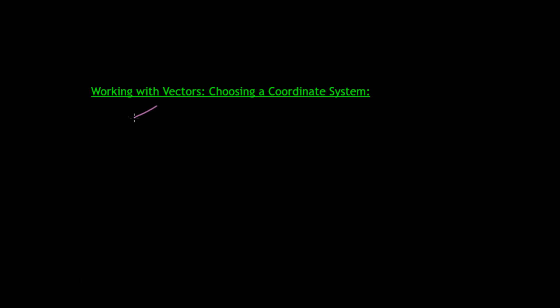We've talked about vectors and what vectors are — how a vector is just a quantity that has both a magnitude and a direction. Because of that, we represent vectors visually as arrows. It could point any direction; it could be some other arrow that points a different way, has a different length, meaning it has a different magnitude and also may have a different direction.